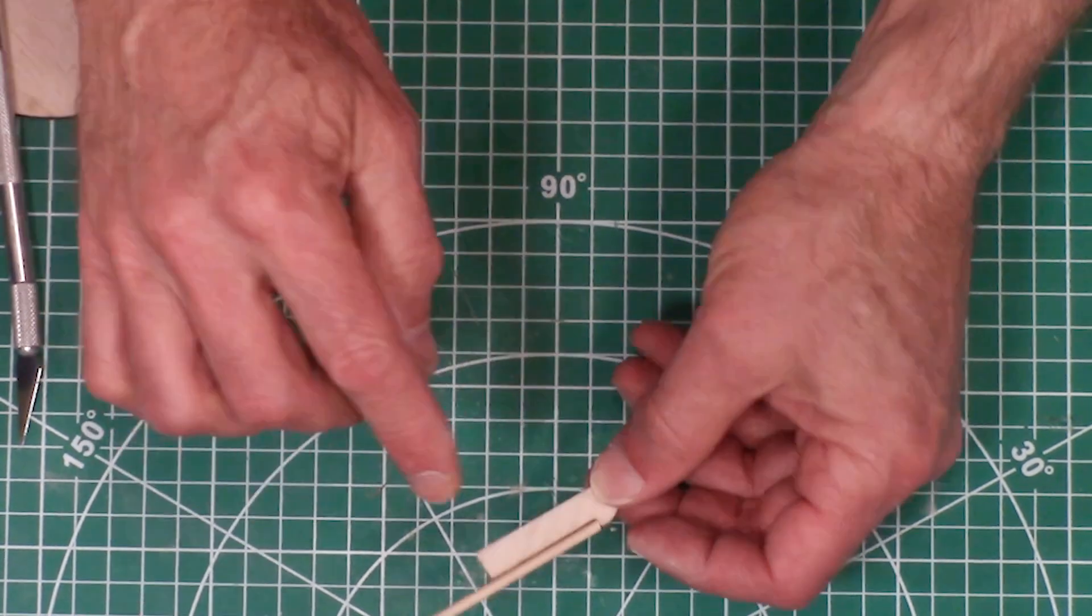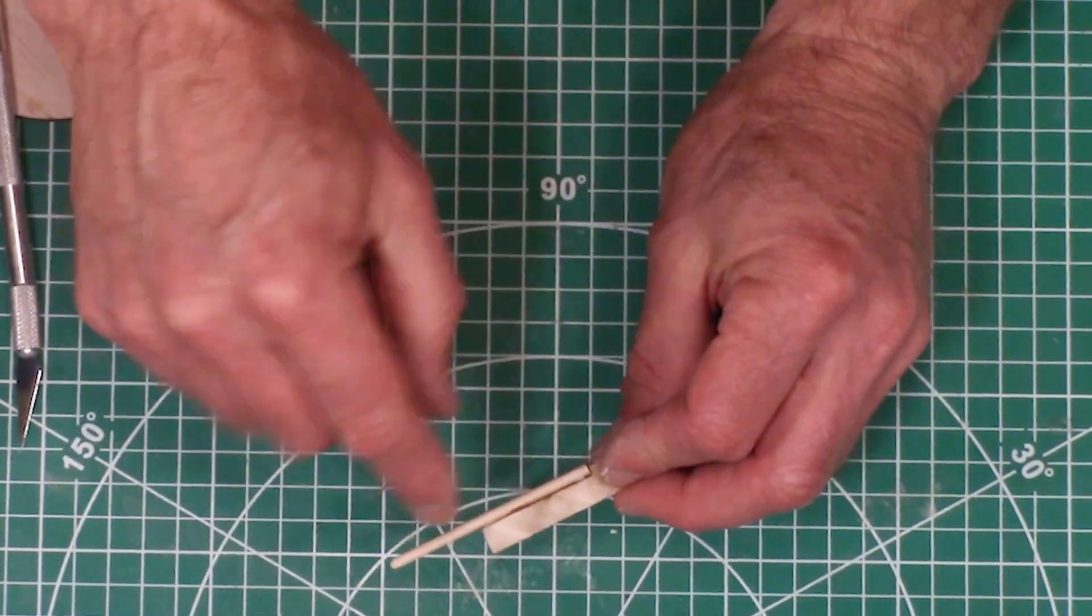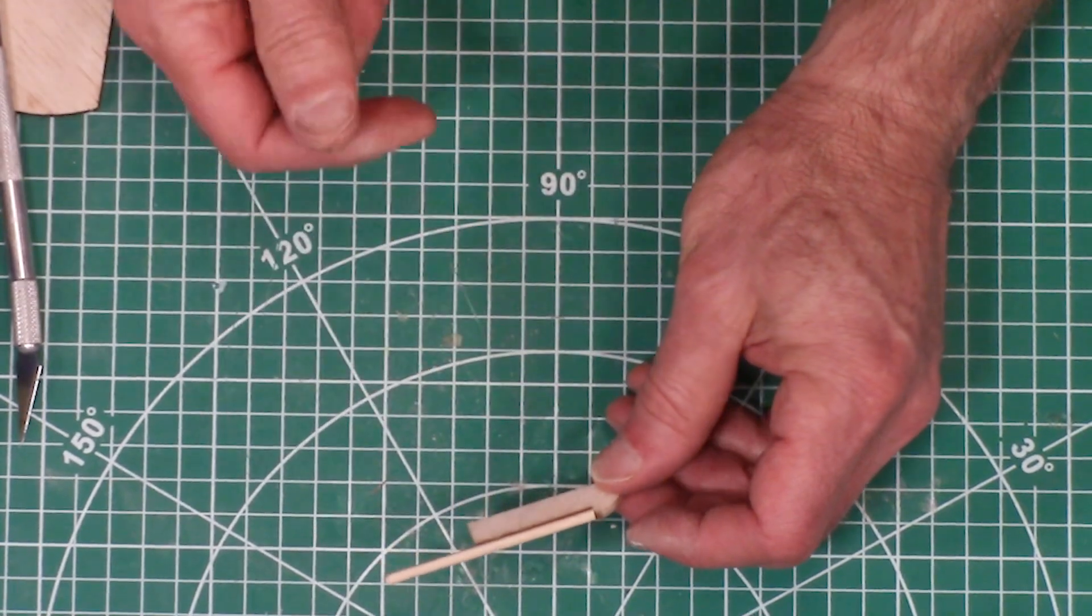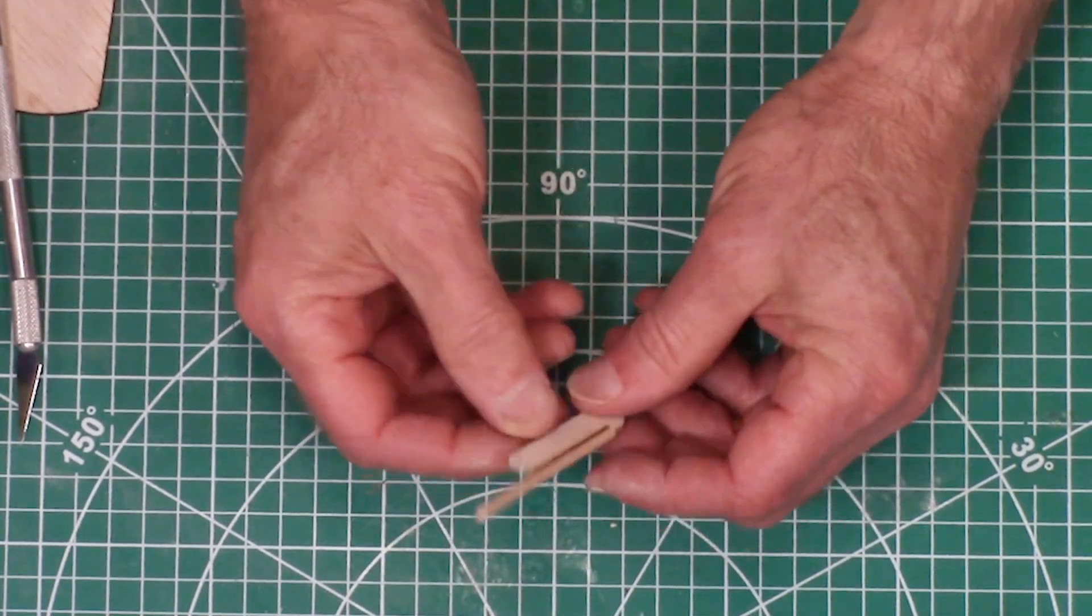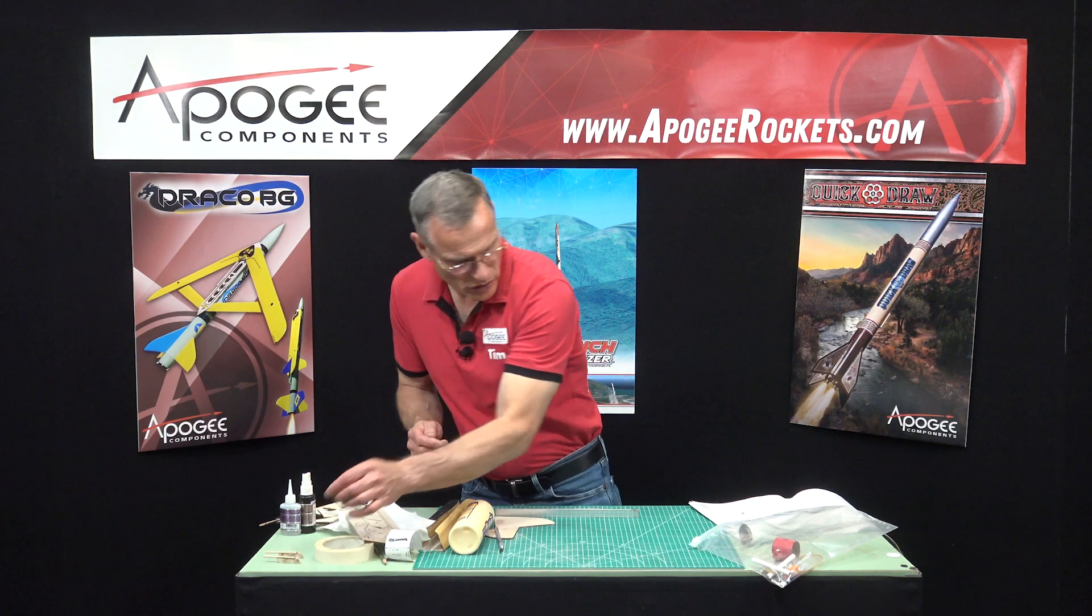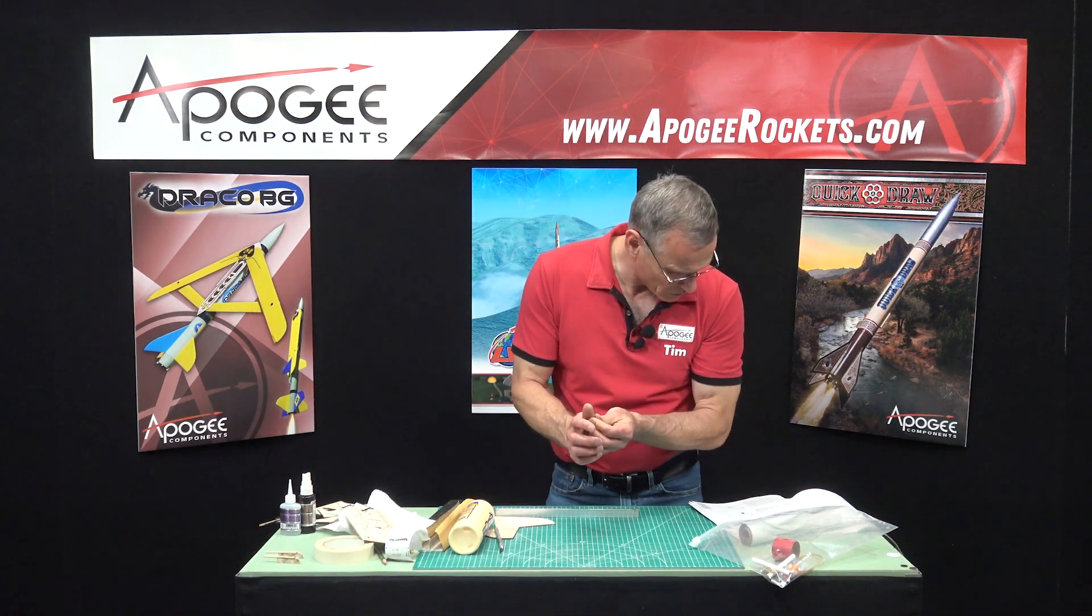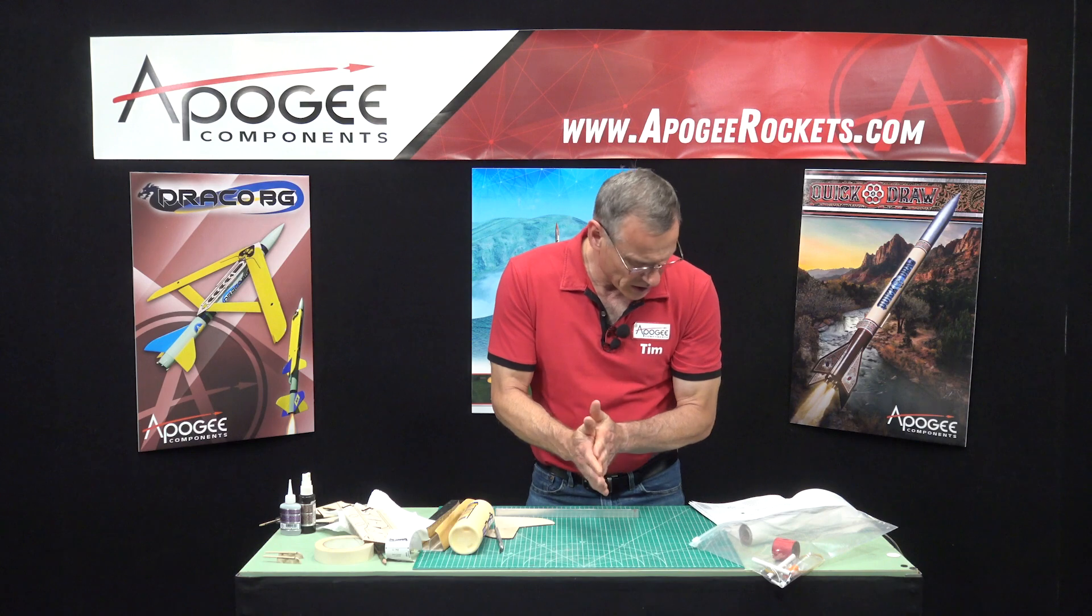I'm going to let that dry, and then I'm going to come back and put a little fillet on that later just to make sure it's nice and strong. So those are going to be set off to dry. And that was step number 15. Step number 16 is to glue the fins onto the tube.